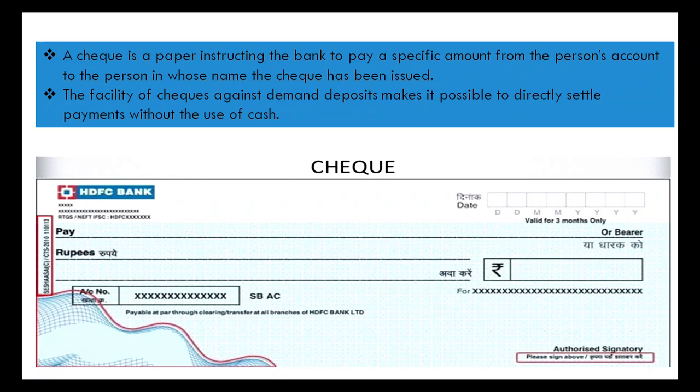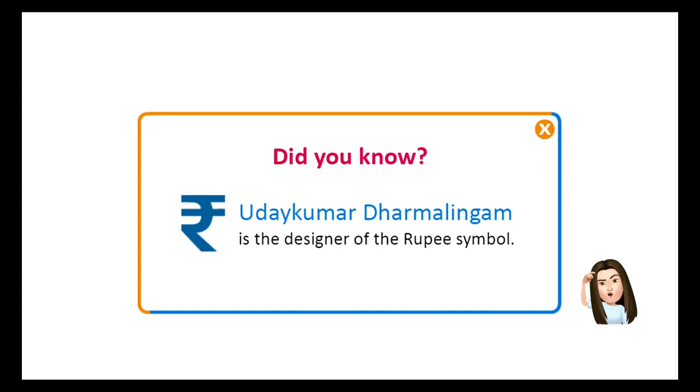So we have three modern forms of money: number one — metallic money; number two — currency paper and coins; and number three — demand deposits. You must keep your checkbook safe and never hand signed blank checks to anyone.